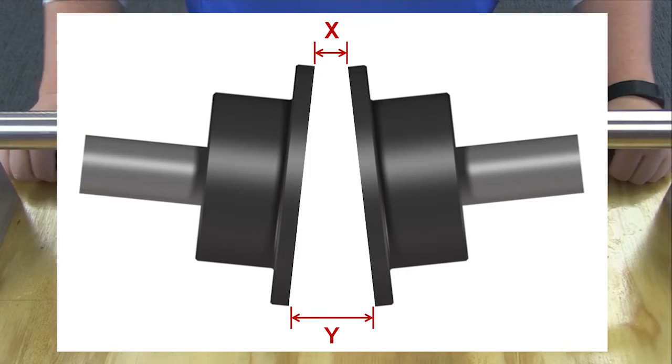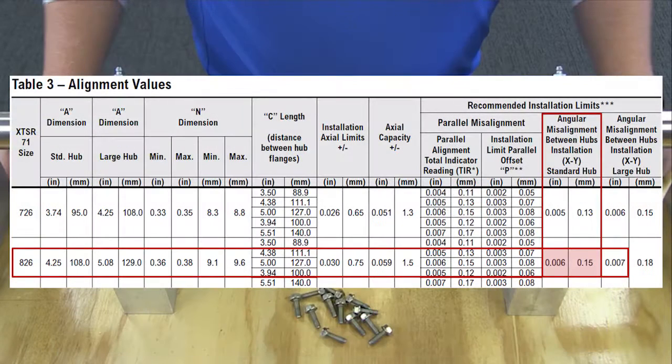For angular misalignment, measure both X and Y shown in the graphic. The difference of these measurements should not exceed the values in this table.